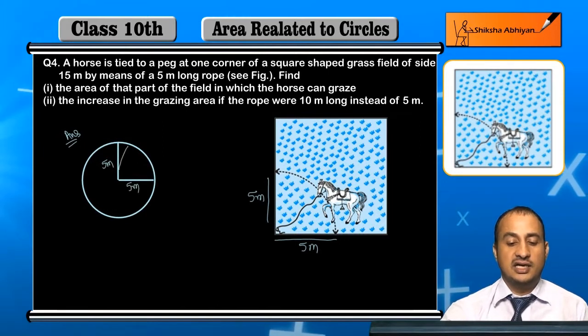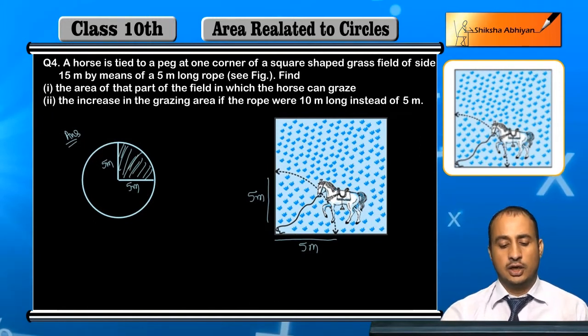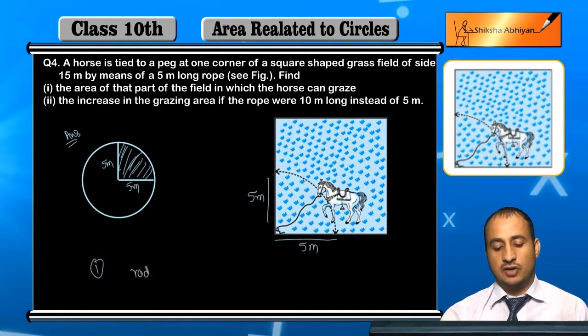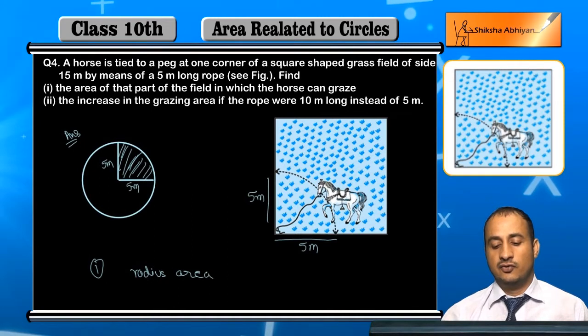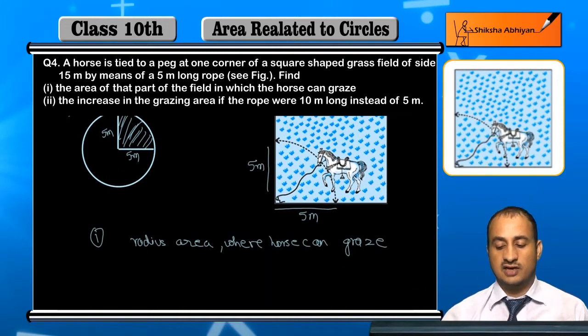So when the horse is at the corner of the square, it can graze in a quarter circle of radius 5 meters.